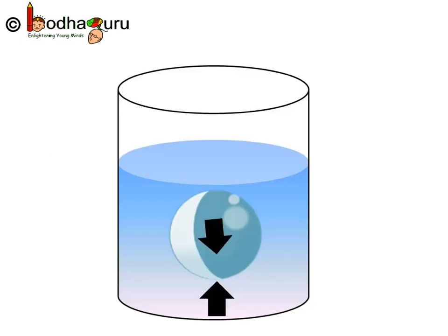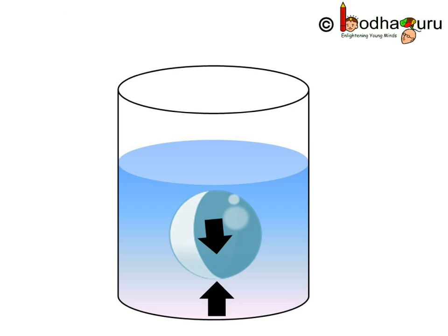Now let us see more examples. An object such as a ball floats — you might be knowing this — because the upward buoyant force is greater than the gravitational pull which acts in the downward direction. Hence, the ball floats because of unbalanced forces acting on it.